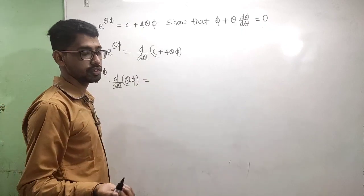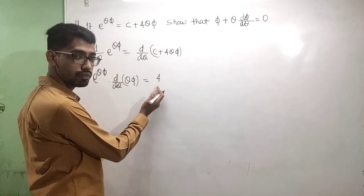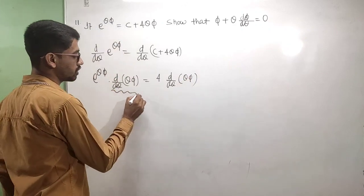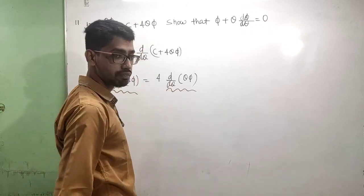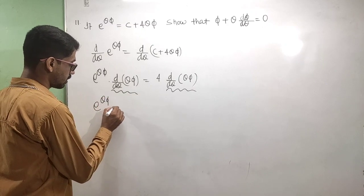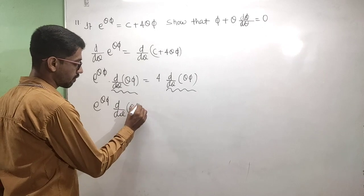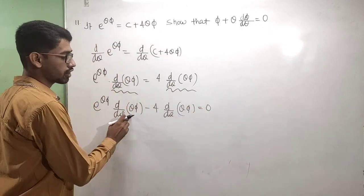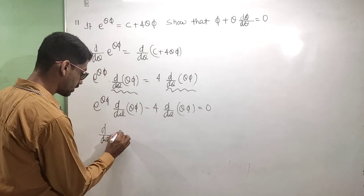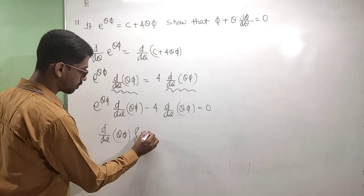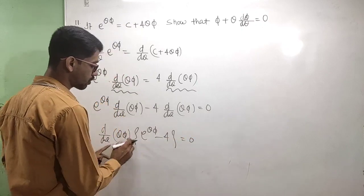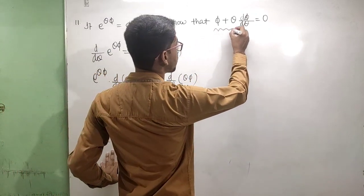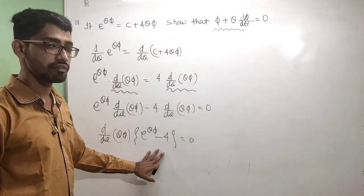Derivative of e^(θ·φ) by chain rule: e^(θ·φ) into derivative of (θ·φ). On the right side: derivative of c (constant) is 0, plus 4 into derivative of θ·φ. Applying product rule to θ·φ: e^(θ·φ) into (φ + θ · dφ/dθ) minus 4 · (φ + θ · dφ/dθ) = 0. Taking (φ + θ · dφ/dθ) as common factor: (e^(θ·φ) − 4) · (φ + θ · dφ/dθ) = 0.